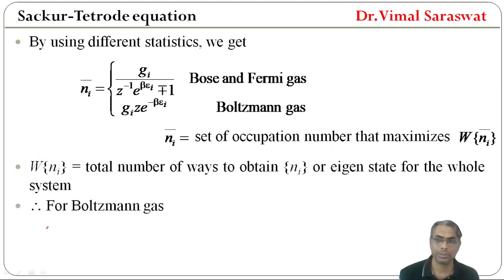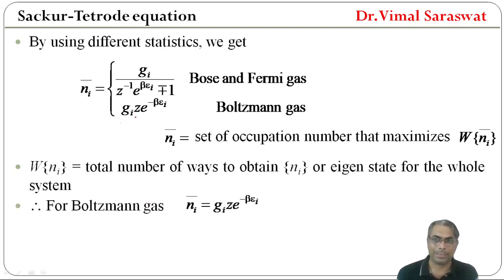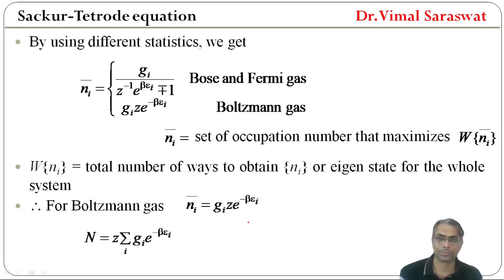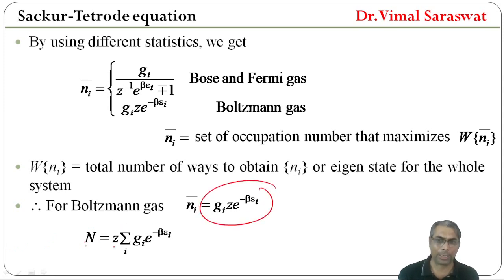For Boltzmann gas, N-bar-i = Gi · Z · e^(-βEi). Using this, the total number of particles N = Σi Ni = Z · Σi Gi · e^(-βEi).